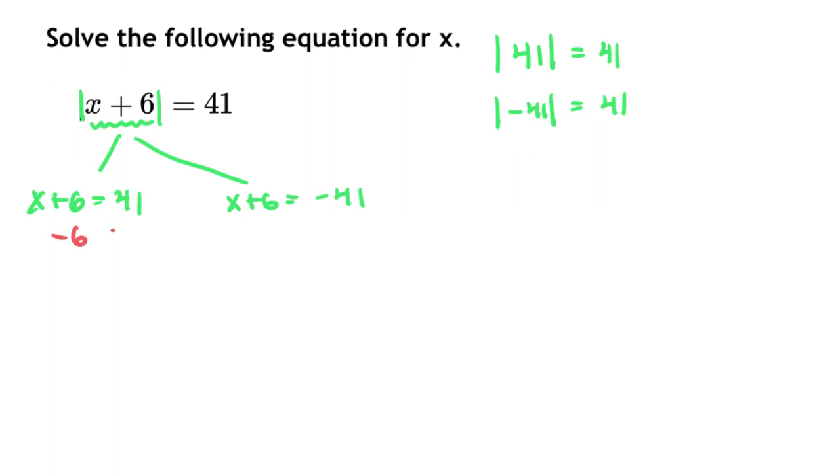So, we're going to subtract 6 from both sides here, and you end up with x equals a 35. You can subtract 6 from both sides here as well, and you end up with x equals a negative 47.